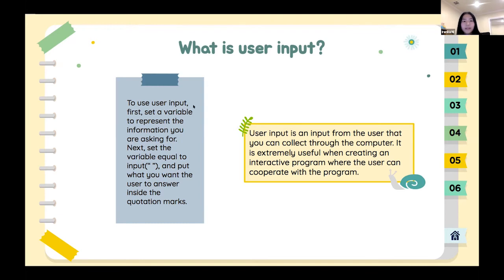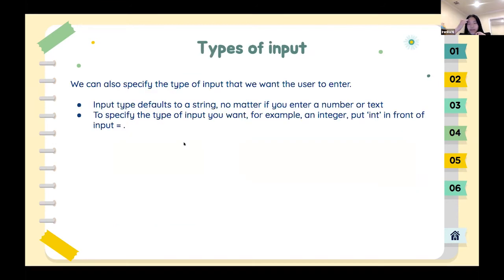To use user input, set a variable to represent the information you're asking for, set the variable equal to input(), and put your question inside the quotation marks. There are also different types of user input. The input type defaults to a string — no matter if you enter a number or text, it will still be a string. If you wanted the input to be a number, you have to put int in front of the input.